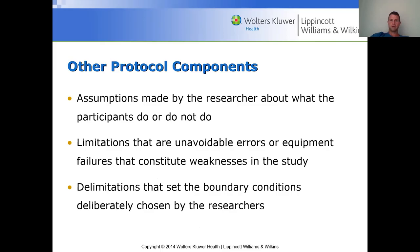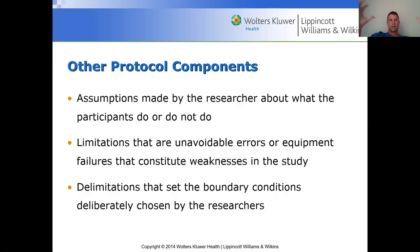Other protocol components include assumptions made by the researcher about what participants do or don't do outside the lab, and limitations that are unavoidable. You cannot control for everything. A limitation might be that you told them what to eat when they're not there, but you're not there to babysit them 24 hours a day — there's the possibility they're eating more calories than they're reporting. You also have delimitations, which are the boundary conditions deliberately chosen by the researcher to try to contain extraneous variables. Sometimes that works, sometimes it doesn't, but you want to set those boundaries.